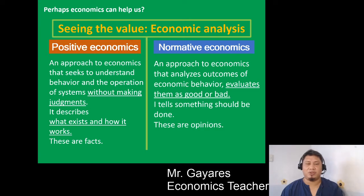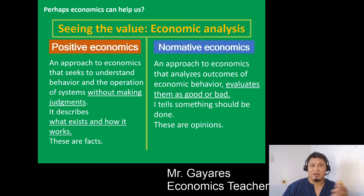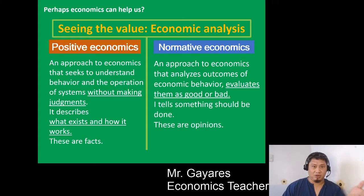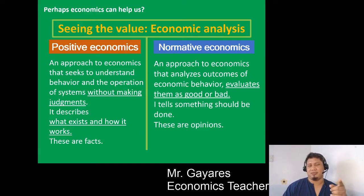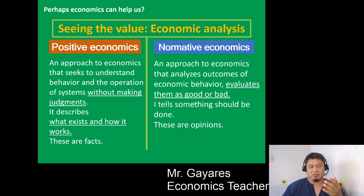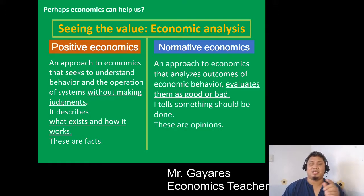Another example: 'The student spent his allowance playing computer games.' That is positive economics — the person just described what you did, with no judgment. But when you say normative economics, the statement becomes: 'You shouldn't have played computer games. You shouldn't have spent your money on computer games. You should have studied instead.' There is a judgment — the word 'should' indicates what you ought to do or should not have done. That is normative economics.